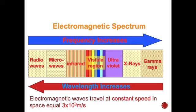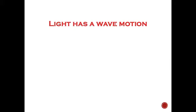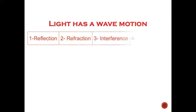Keep in mind that electromagnetic waves travel at a constant speed in space, which equals 3×10⁸ meters per second. Light has a wave motion. To confirm that light has a wave motion, four main conditions must be found: first, reflection; second, refraction; third, interference; and fourth, diffraction.